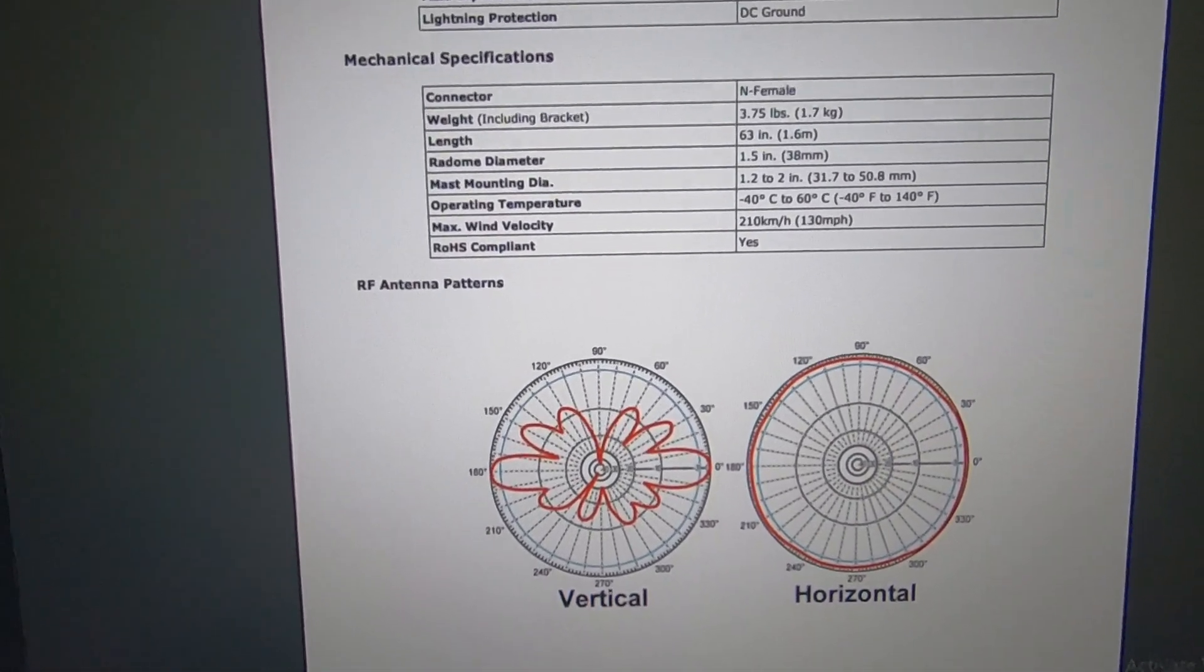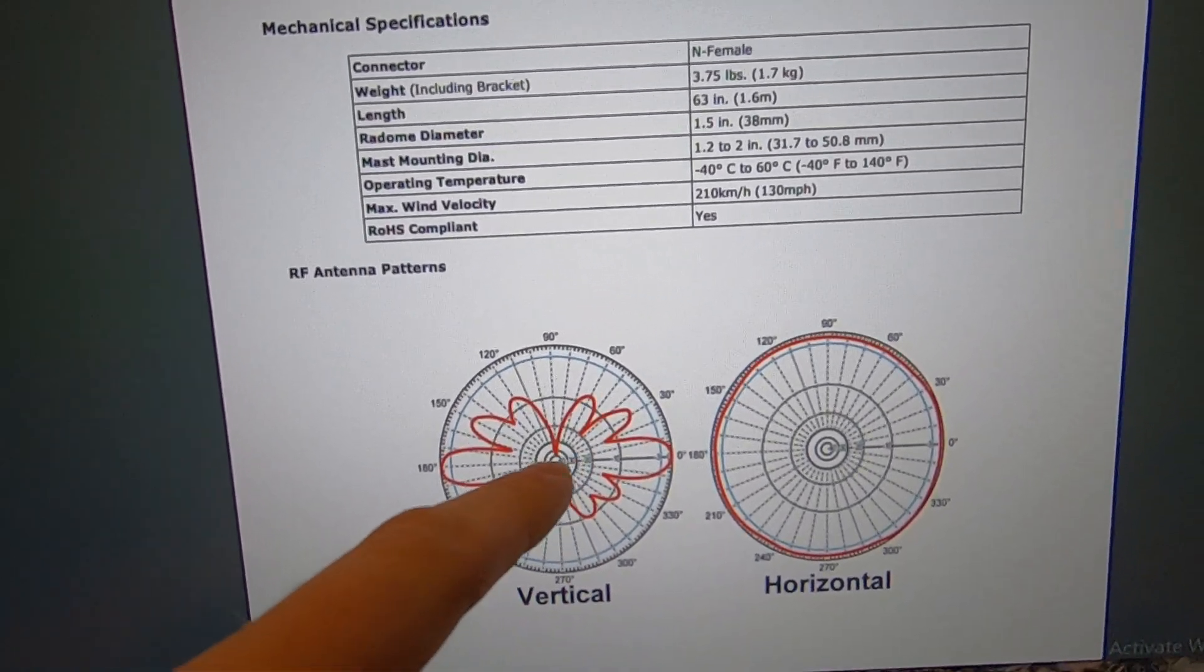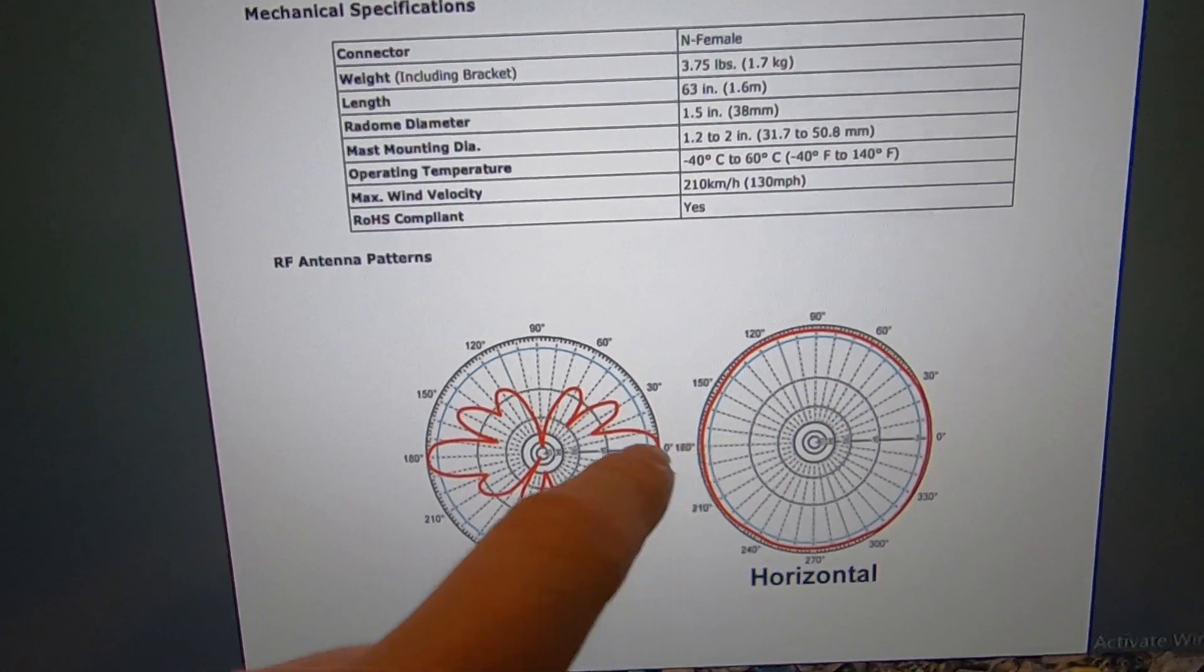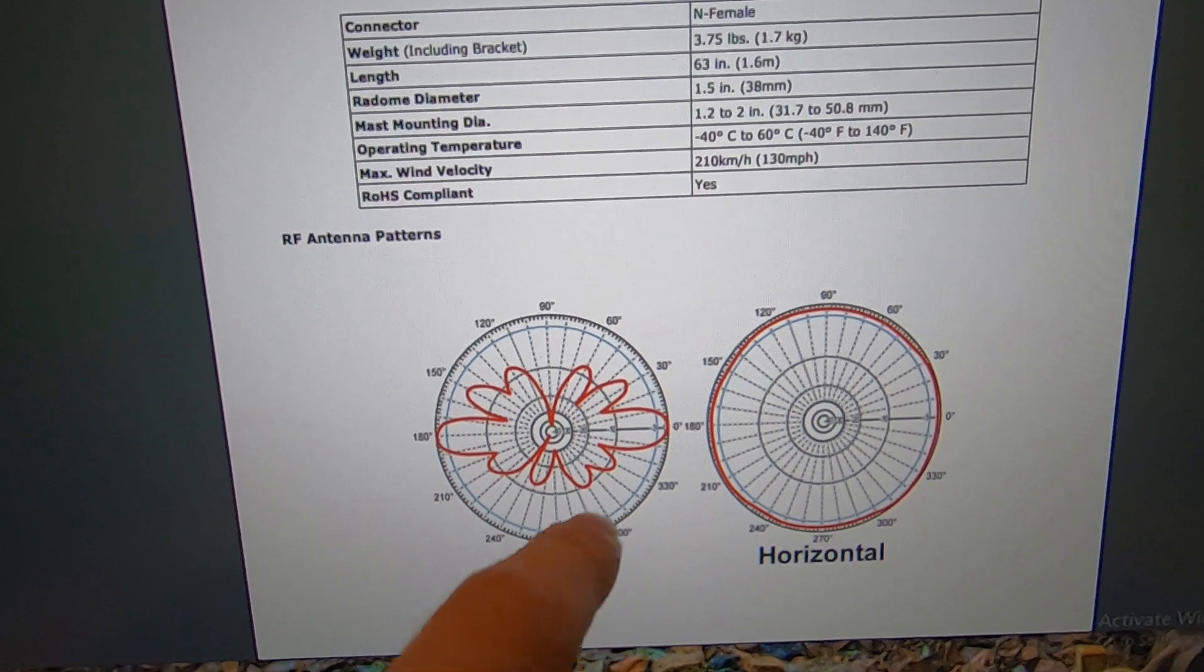And now here's where the gain comes in. If we have an antenna right here, its pattern, its gain, is mostly going to be in this direction. You're going to notice there's some of these little splashes right here. We'll come back to that in a little bit.